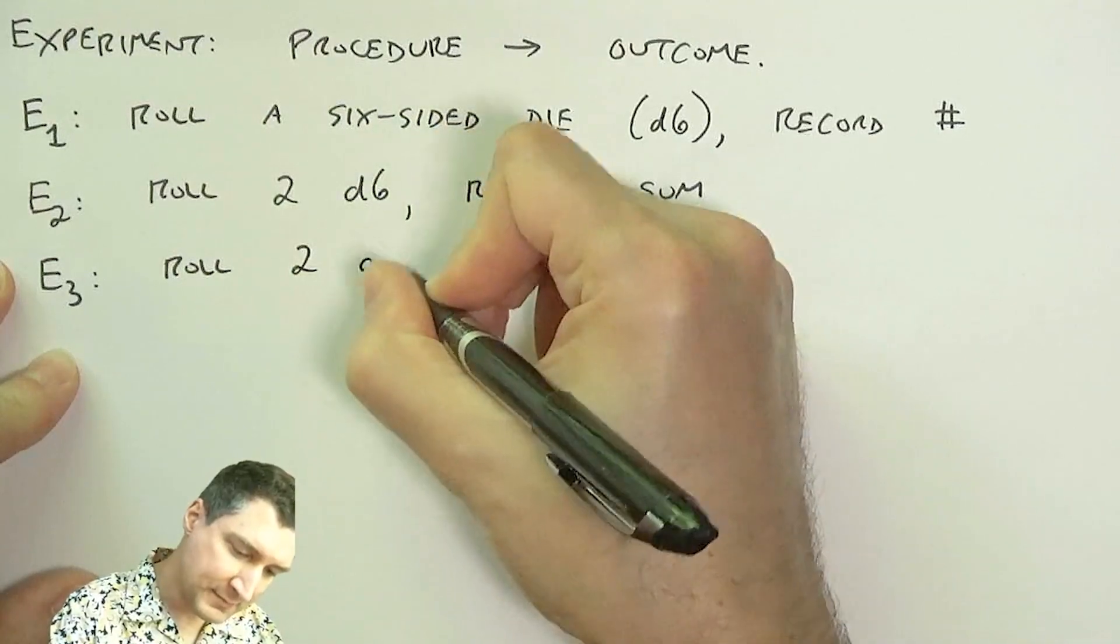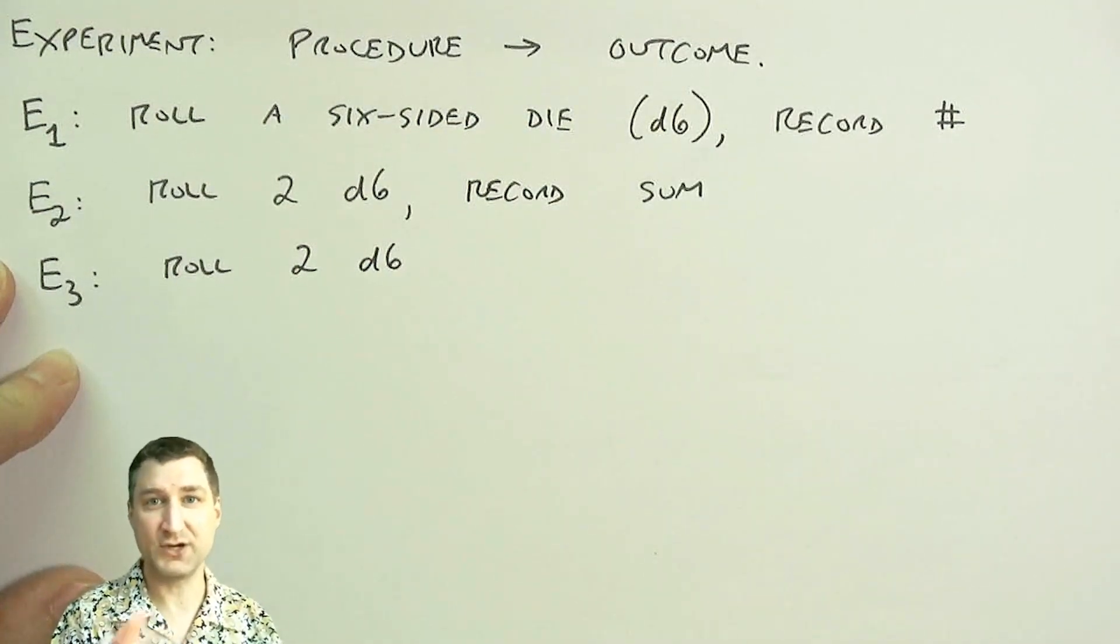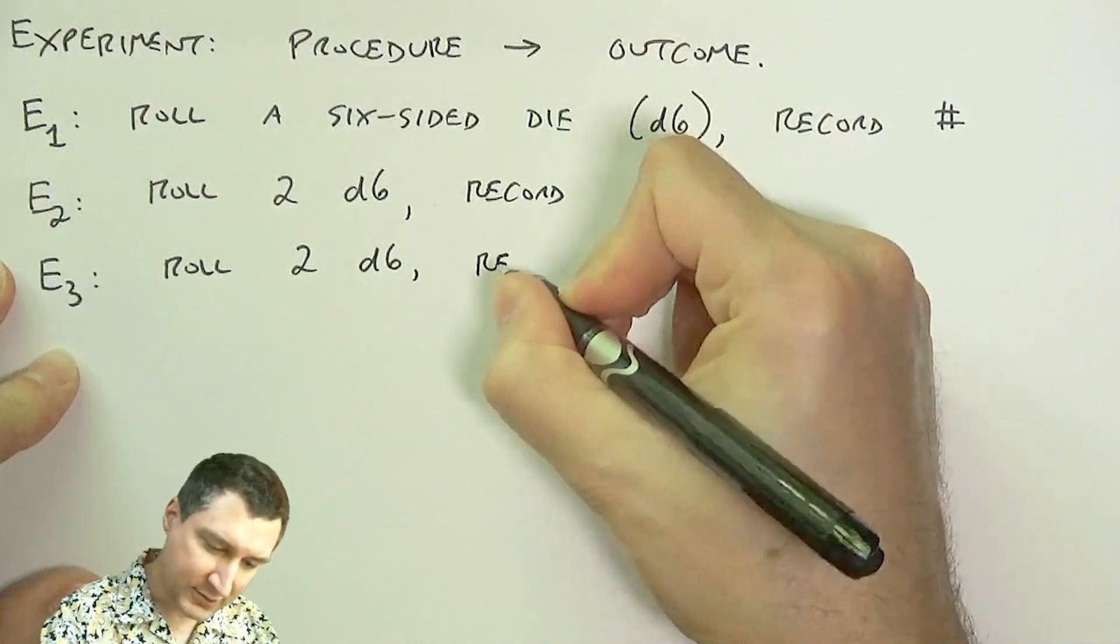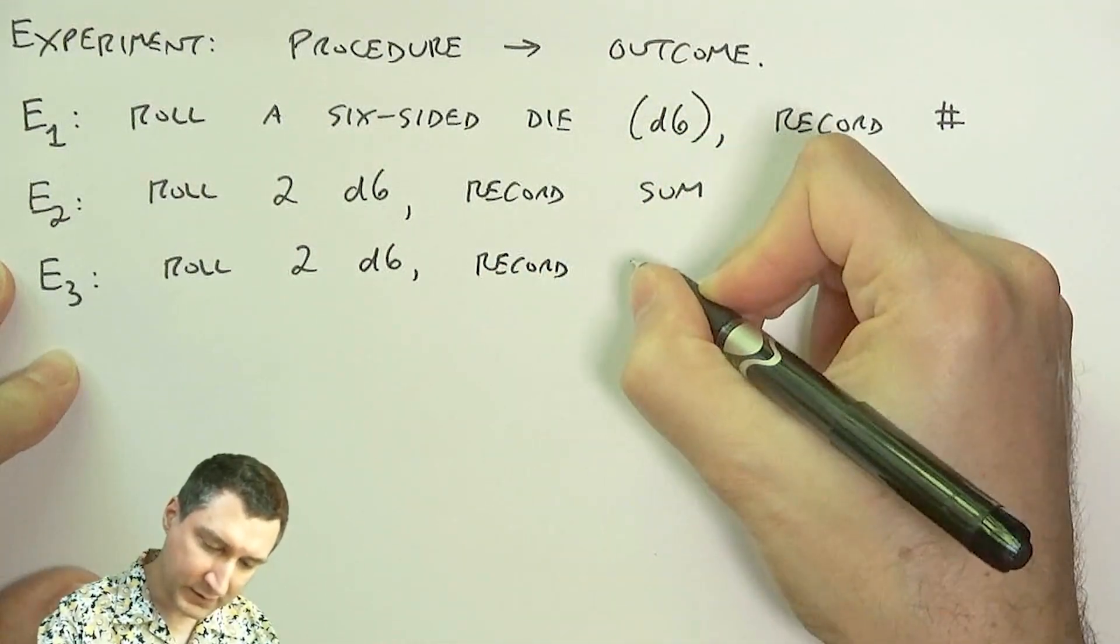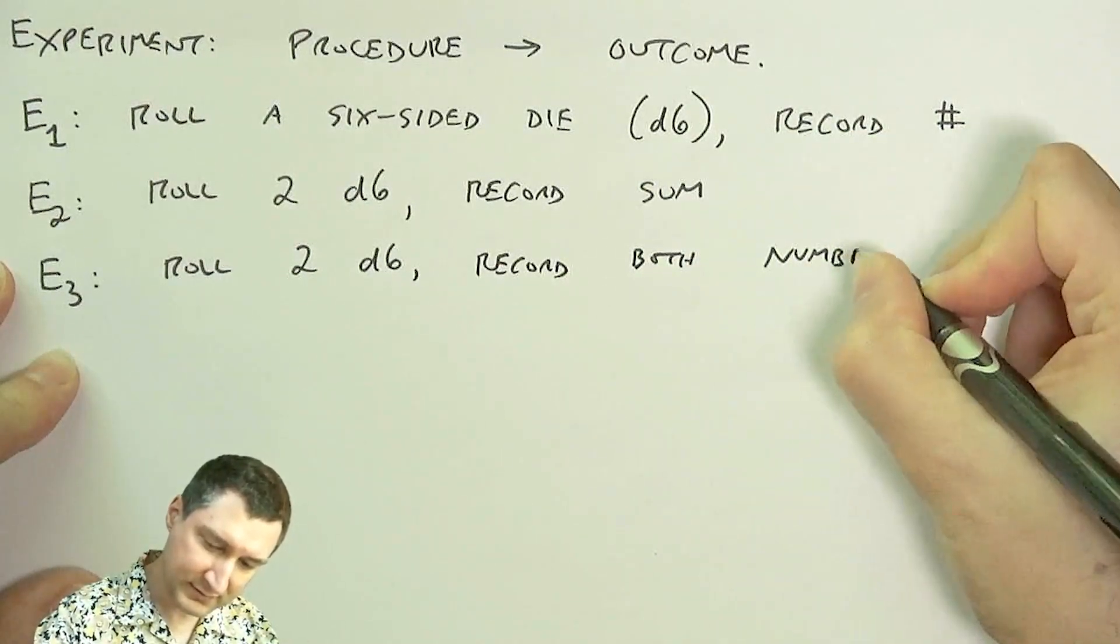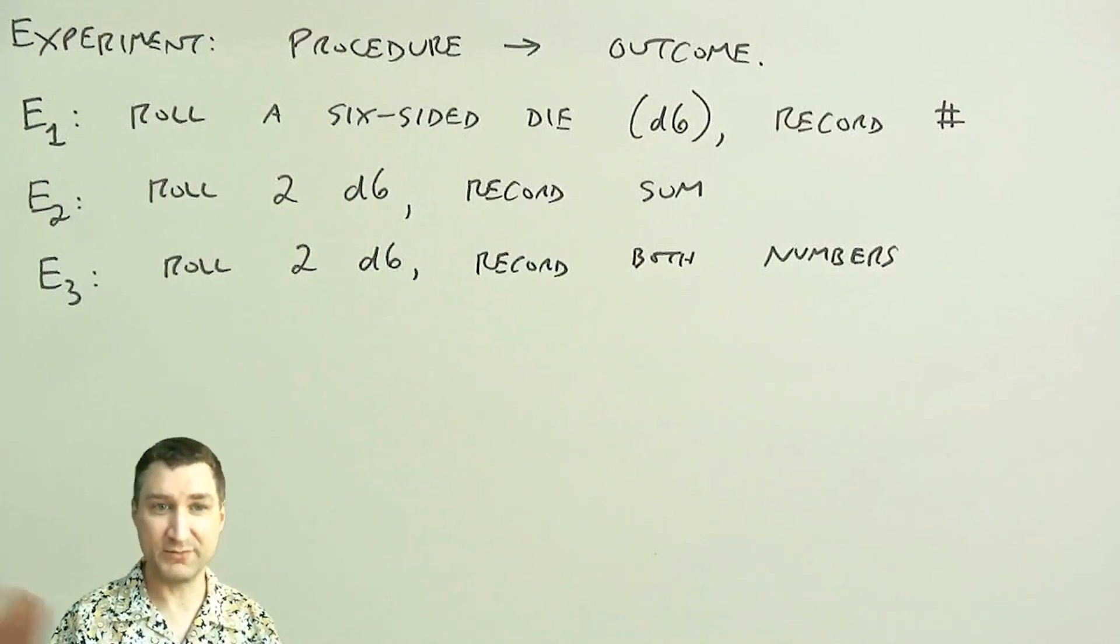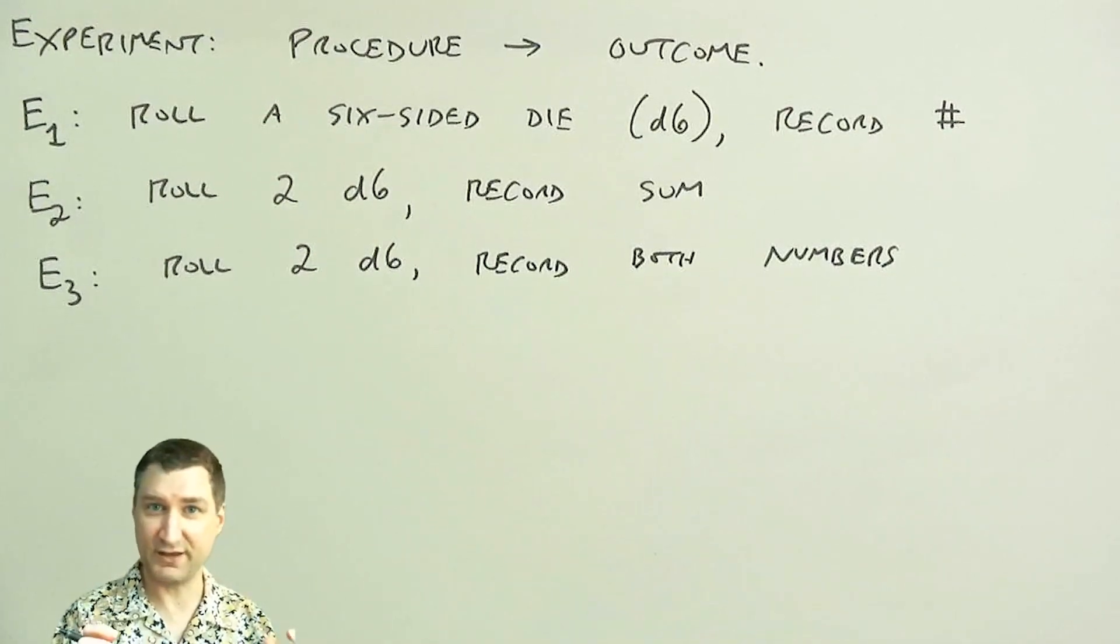Or I could have the same procedure in some sense, but I use a different mechanism to get the outcome. So I could roll the two six-sided dice and I could record both numbers. So for example, here I have 36 possible outcomes: the thing I saw on the first die, and the thing I saw on the second die.